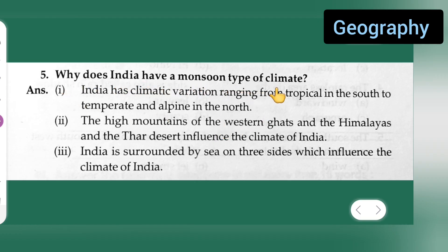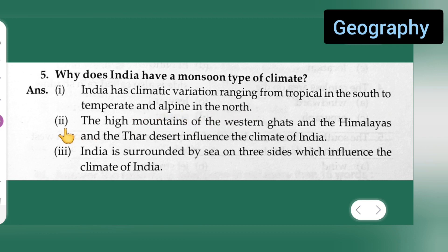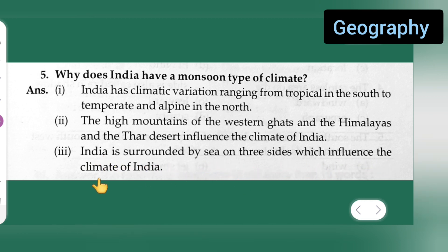Why does India have a monsoon type of climate? There are three points. First, India has climatic variation ranging from tropical in the south to temperate and alpine in the north. Second, the high mountains of the Western Ghats, the Himalayas, and the Thar Desert influence the climate of India. Third, India is surrounded by sea on three sides, which also influences its climate.